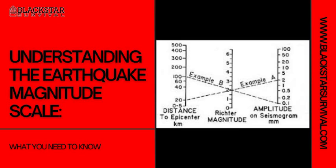The Earthquake Magnitude Scale has a rich history and development, originating from the Richter Scale, which was developed in 1935 by Charles F. Richter. Over time, more advanced scales like the Moment Magnitude Scale (MW) have been developed to measure earthquakes more accurately. The magnitude of an earthquake is determined by measuring the amplitude of seismic waves recorded by seismographs and calculating the energy released.